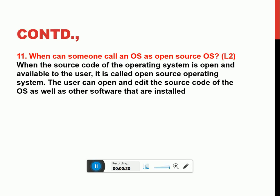When can someone call an OS an open source OS? Simple — when the source code is available for you to edit, do some modification, test it, and build it, that is called an open source OS. For example, a few versions of Linux available in the market are all open source — the code is available. But Windows — you will not get the code. So please remember, all open source OSes will have the code readily available for you.